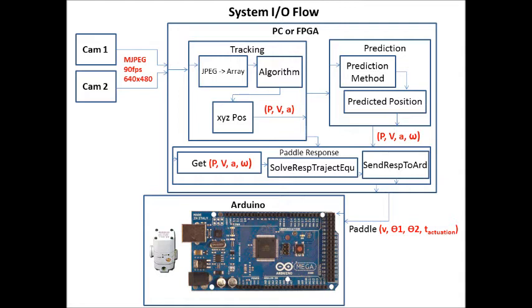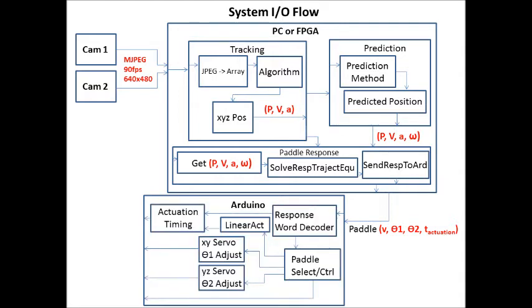Which are the different angles that the paddle can turn at, and the time to actuate. The Arduino then takes the word that's sent from the paddle response system and decodes it, and figures out which paddle it needs to select.